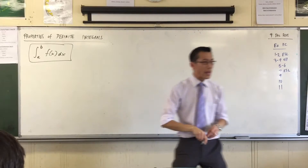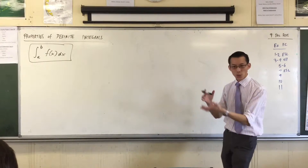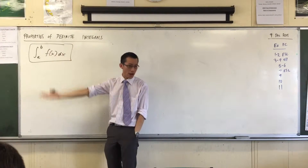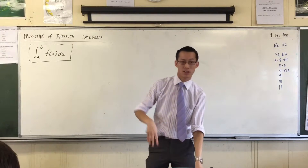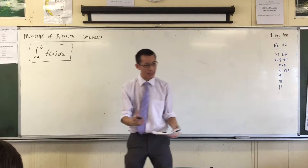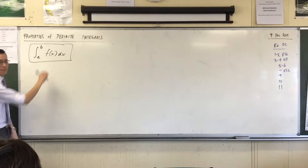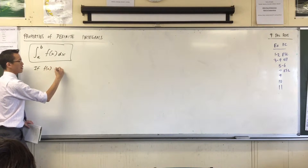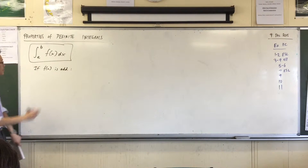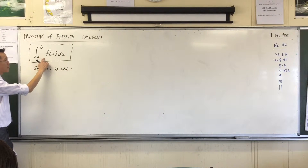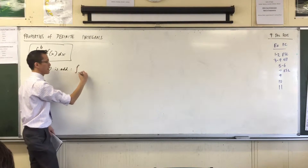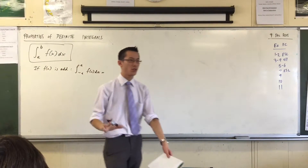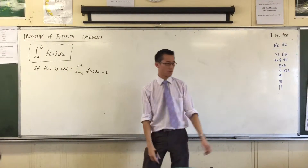We have a series of properties we can notice about definite integrals, based on the fact that they're about solving area problems. You've already noticed the first couple. Based on whether the function you're integrating is odd or even: if f is odd, and you're integrating from negative a to a, those two areas exactly cancel out and you get zero.